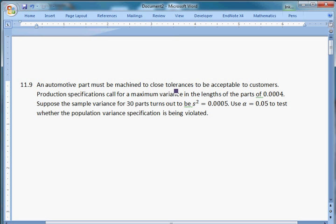An automotive part must be machined to close tolerances to be acceptable to customers. Production specifications call for a maximum variance in the length of the parts of 0.0004. Suppose the sample variance for 30 parts turns out to be s-squared equals 0.0005. Use alpha equals 0.05, 5% significance level, to test whether the population variance specification is being violated.